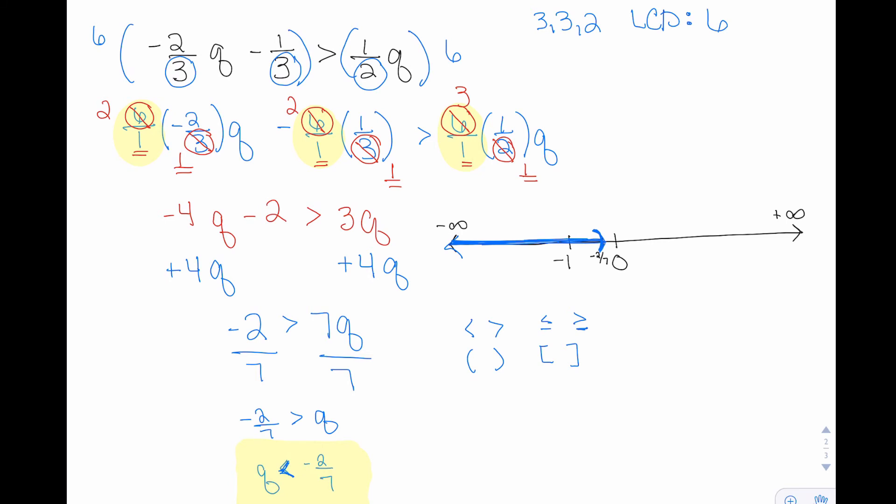The leftmost point in this case is negative infinity comma, and then the rightmost point on our graph is negative two over seven.